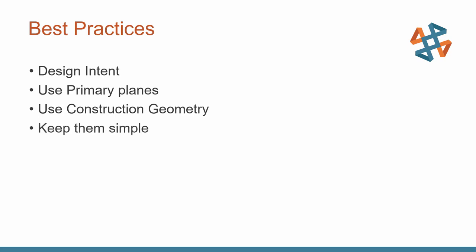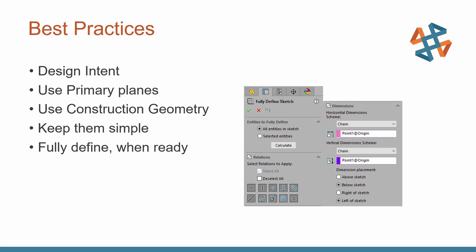Keep your sketches simple. Simple sketches are easy to understand, easy to share, and they rebuild quicker. More complex sketches are hard to understand — you could have hundreds of entities and several hundred relations — and they're slower to solve. You also have a higher chance of adding that one relation that tips it over the edge and the sketch goes over-defined or cannot solve. So keep them simple.